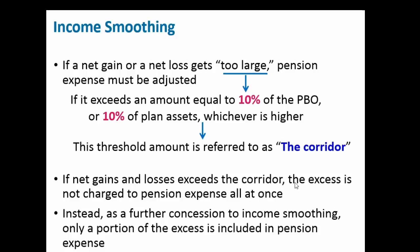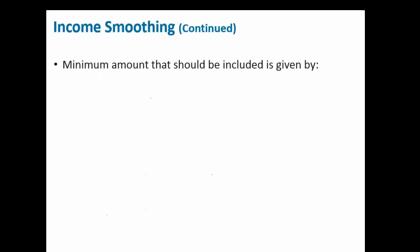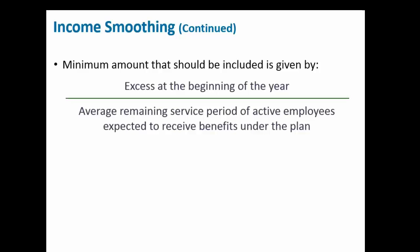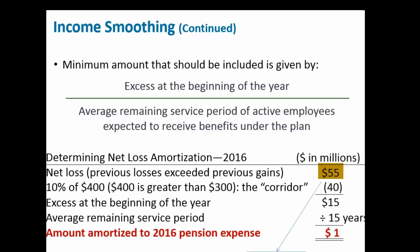If the net gain or loss exceeds the corridor, the excess is not charged to the pension plan all at once. As a further concession to income smoothing, only a portion of the excess is included. The minimum amount that should be included is the excess at the beginning of the year divided by the average remaining service life of active employees. So we have a net loss, and we multiply 10% of the greater of either the PBO or plan assets to find the excess, then divide by the average remaining service life to get the expense.